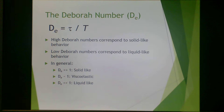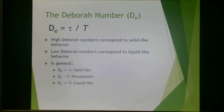In general, a Deborah number much greater than 1 indicates a solid-like material. A Deborah number of about 1 is usually considered viscoelastic, and a Deborah number much less than 1 is considered liquid.